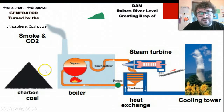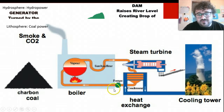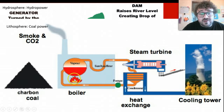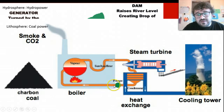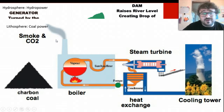Coal power — you'll start to see a pattern here. We've got coal which comes out of the ground. The water is boiled, turns into steam, turns a turbine, and is then condensed back down and keeps going. You have the cooling tower pumping just steam into the atmosphere — that's not too bad. But over here you're pumping smoke and carbon dioxide into the atmosphere, and that's much, much worse. So coal power is something to be avoided.